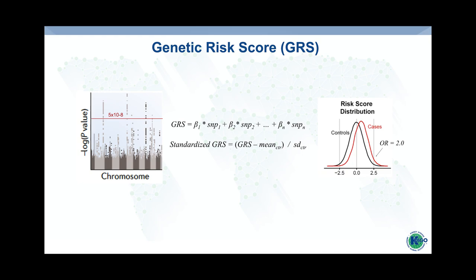You can derive mean and standard deviation across the population and standardize this metric to compare risk scores across populations. If your risk score is performing well, the cases will have a rightward shift of the distribution. You can then select an actionable threshold — in this case an odds ratio of two, though it is very phenotype-specific — to define individuals at high risk who might be amenable for intervention.